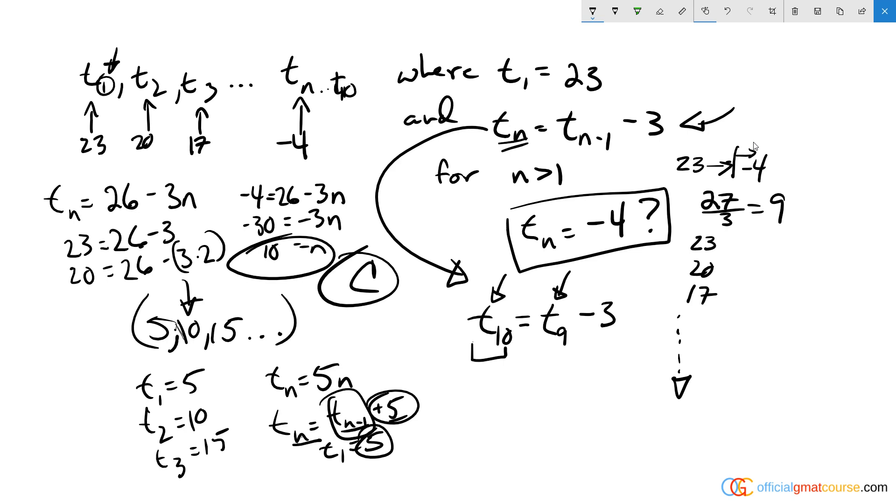And you could think about it from that approach as well, which is our steps are three, the distance is 27, but we're starting at t sub 1. And so we need to take nine steps and that means we're going to end up at t sub 10, and 10 is our answer.